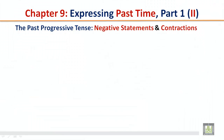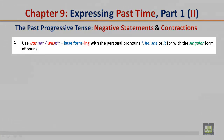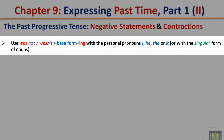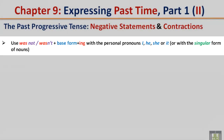The Past Progressive Tense — Negative Statements and Contractions. Use 'was not' or 'wasn't' plus the base form plus '-ing' with the personal pronouns I, he, she, or it, or with the singular form of nouns.